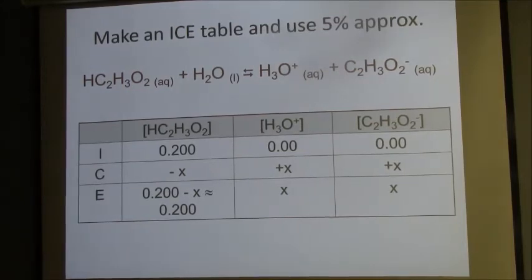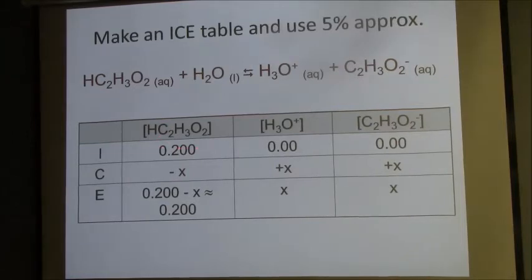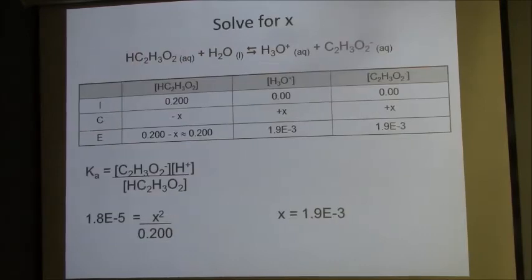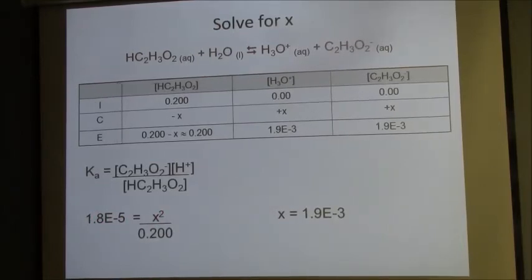We're going to make the 5% approximation because this Ka is substantially less than 1 — 1.8 × 10⁻⁵ is much less than 1 — so we can assume that at equilibrium that 0.2 molar solution hasn't really changed very much. X is going to be the same quantity that both products go up by. Using the Ka value we were given: 1.8 × 10⁻⁵ = x² / 0.2.